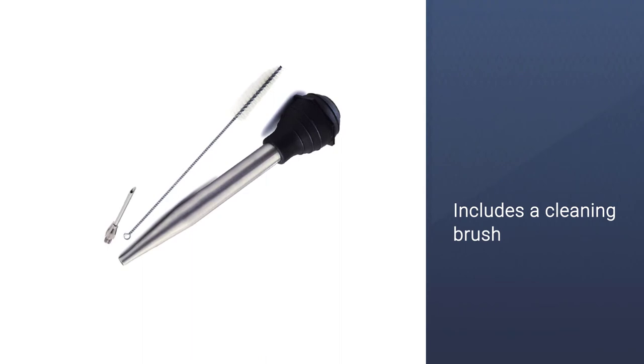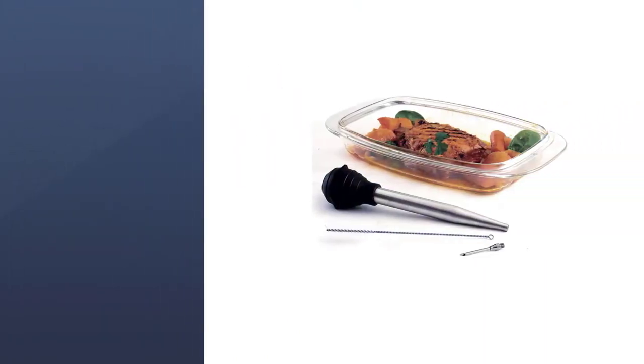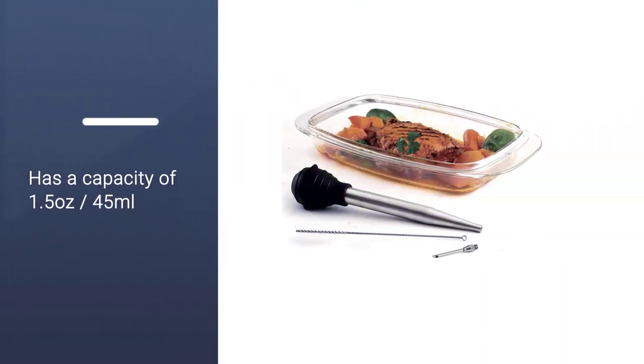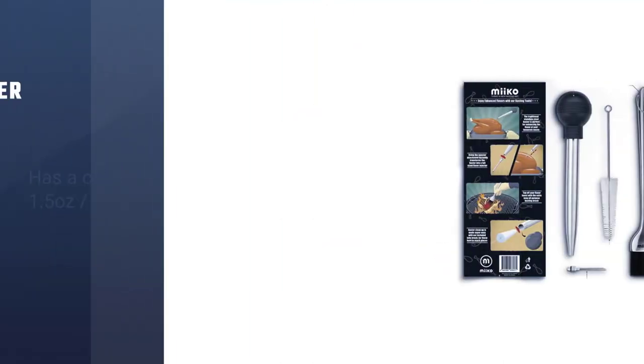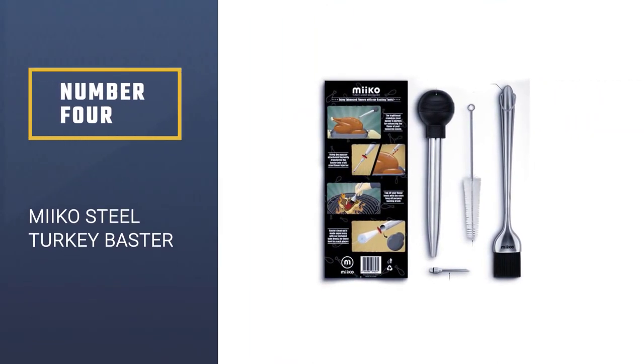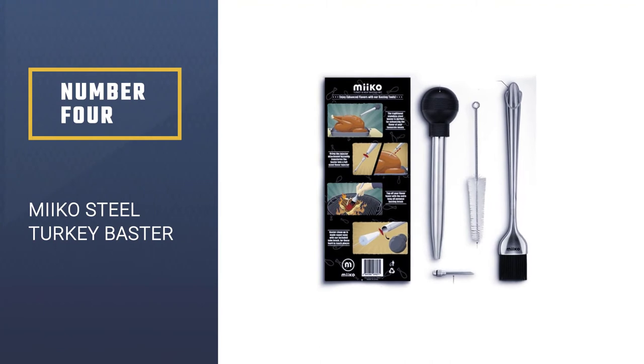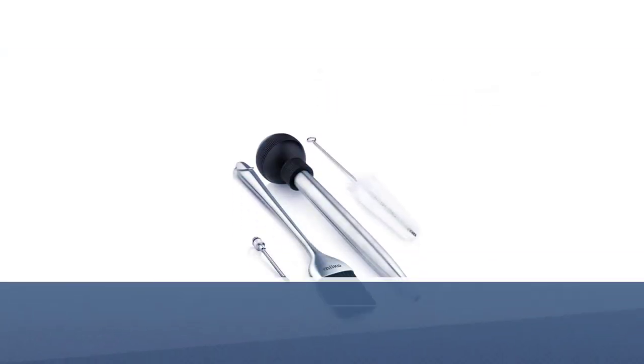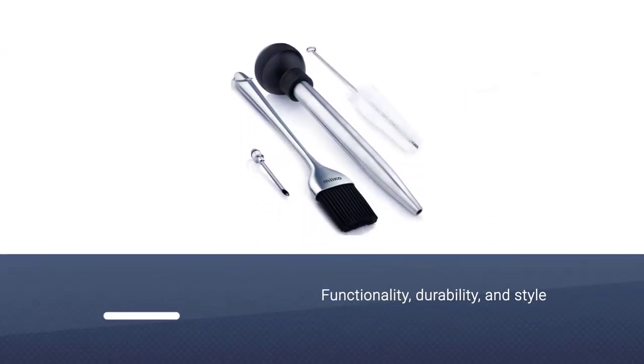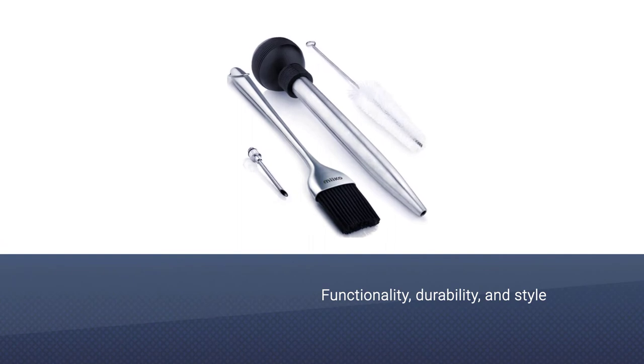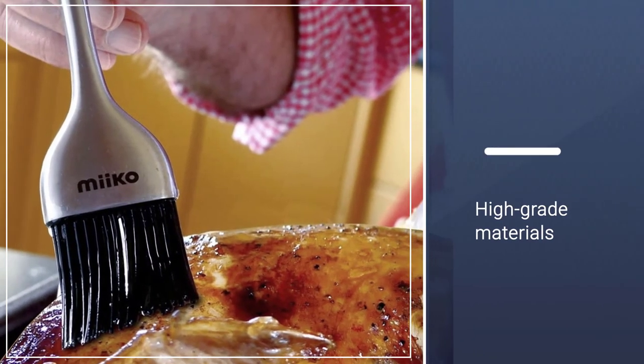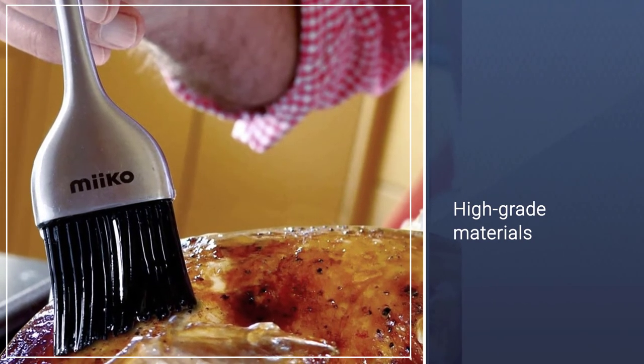Number four, Miko Steel Turkey Baster. This stainless steel turkey baster and basting brush win points for functionality, durability, and style. The high-grade materials stand up to heat and the grooved neck of the baster ensures less spilling.